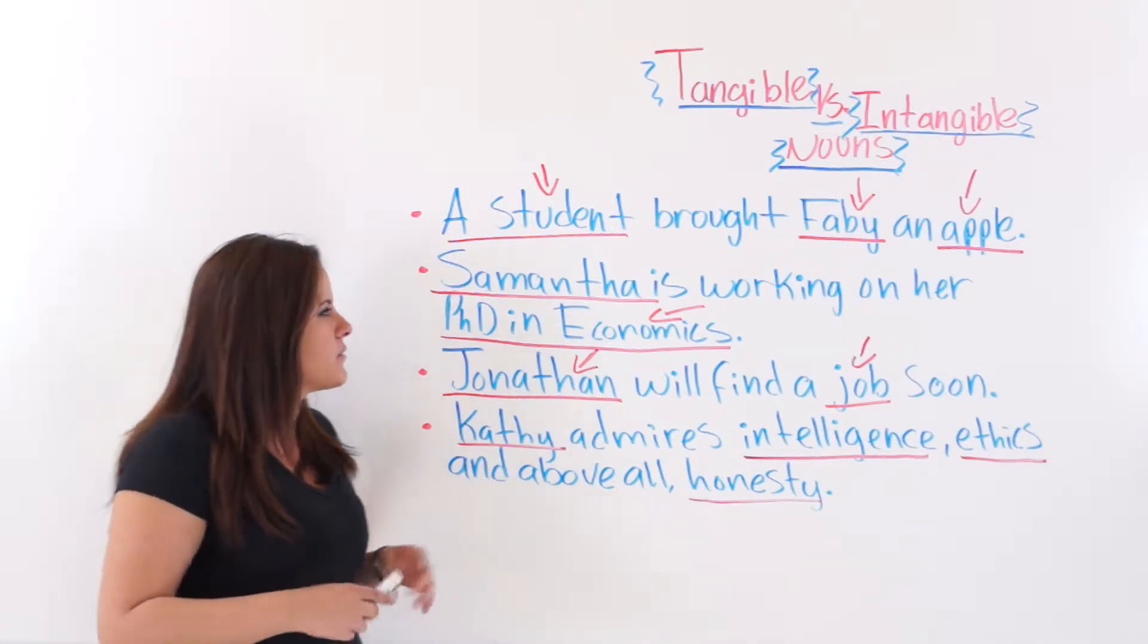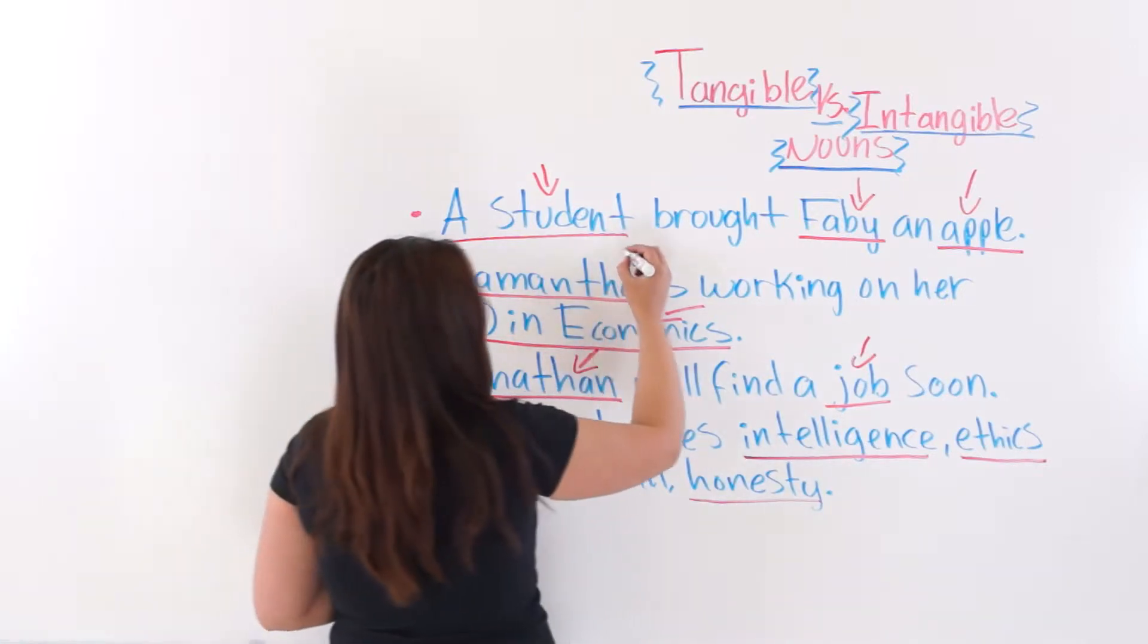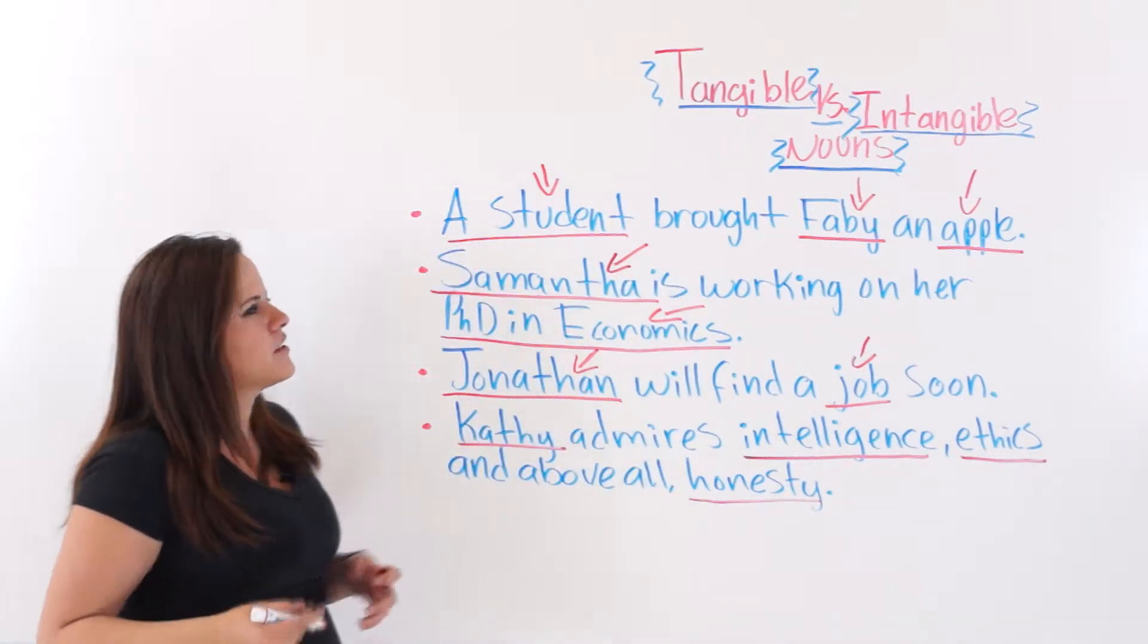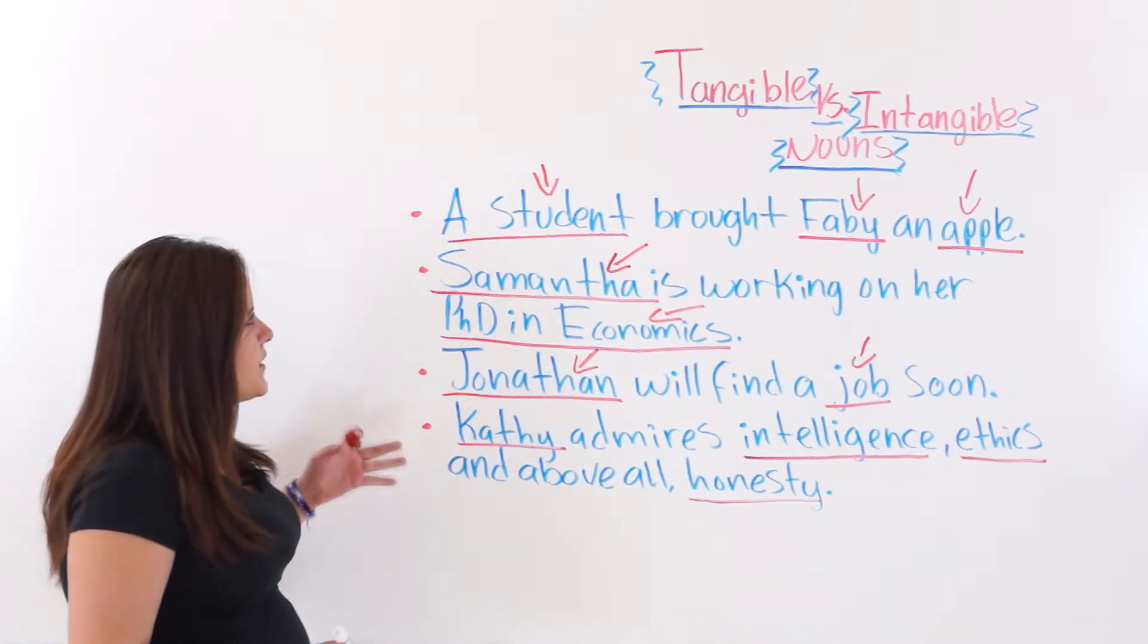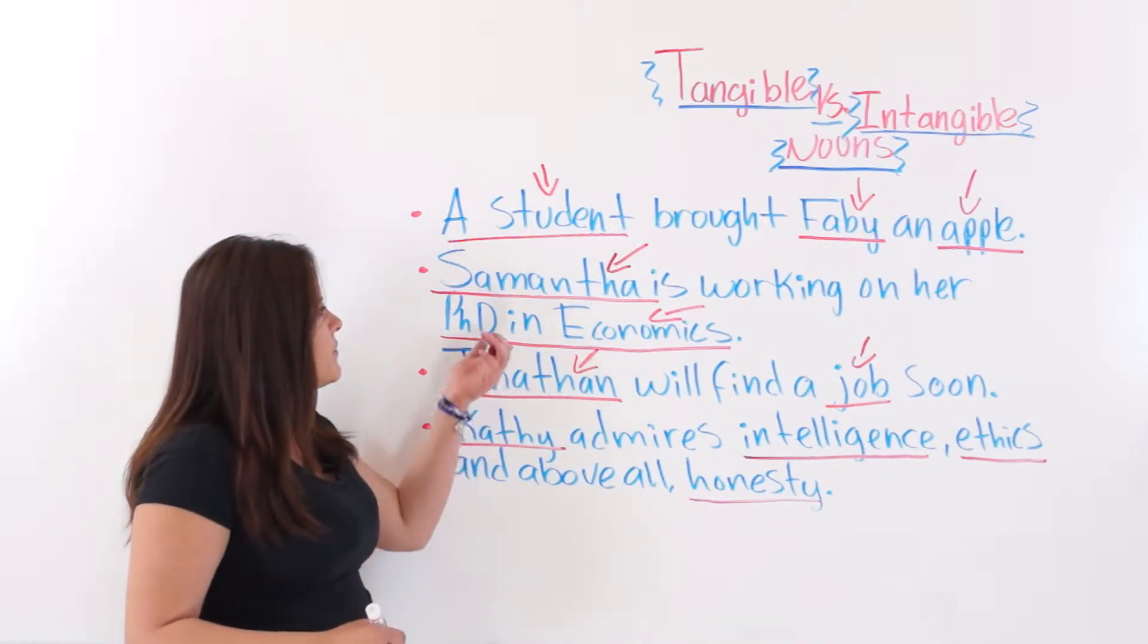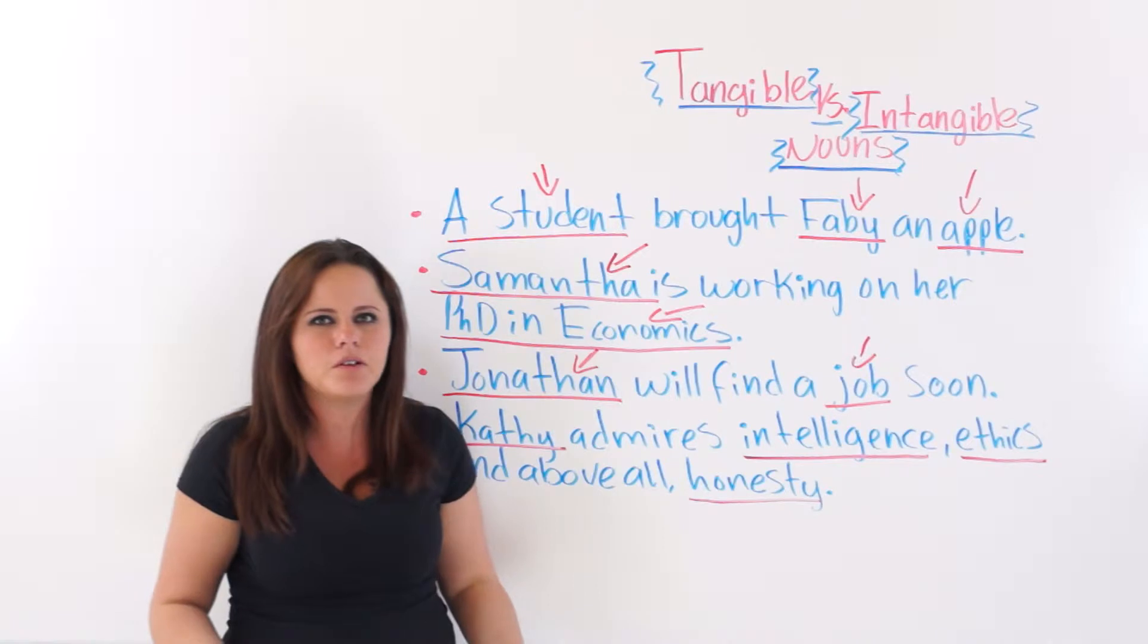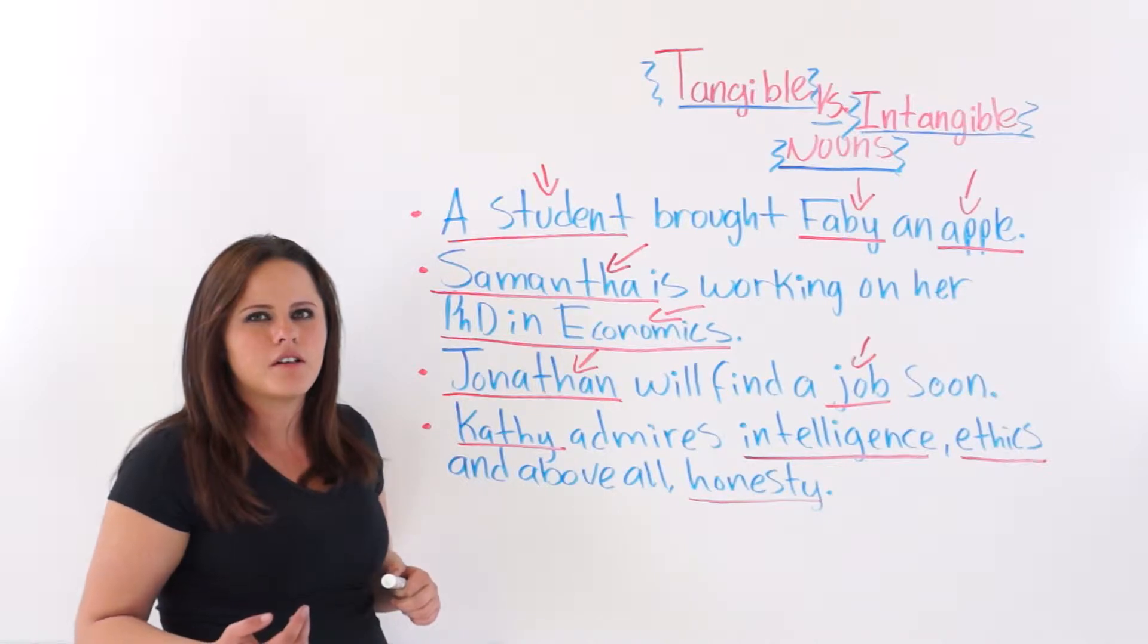Samantha is working on her PhD in economics. Right here, this noun—this proper noun, by the way—is a tangible noun, and PhD in economics is an intangible noun. Why? Because you cannot perceive this with your senses, but you know it's a thought, it's an idea.